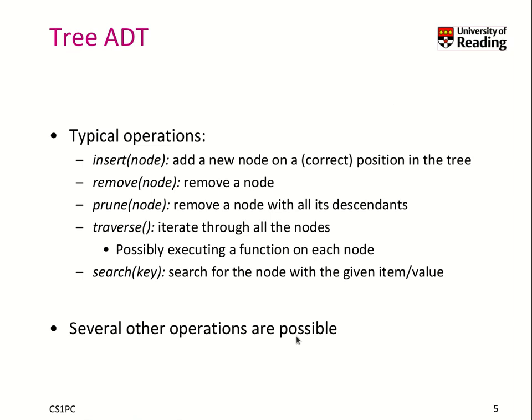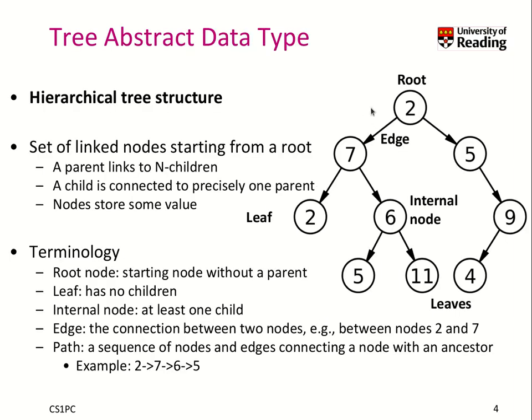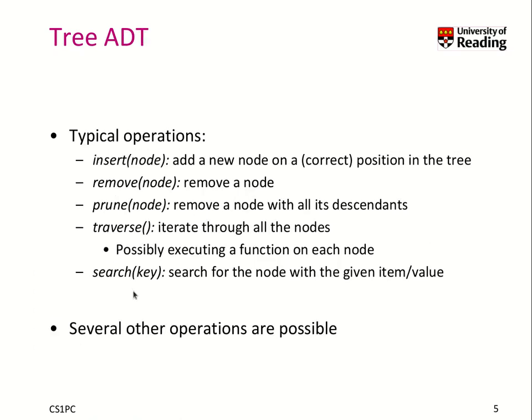Typical operations that you do with a tree as a data type are: you insert a node at a position on the tree; you remove a node; you prune a node, which means you remove that node and all its descendants — all its children and their children and so on, like really cutting off a branch so everything below it would be gone. Traversing means you want to iterate through the nodes, potentially executing a function on each node. And lastly, you want to search for a key with a given value inside the tree. There are many more operations possible — here is just a typical set.